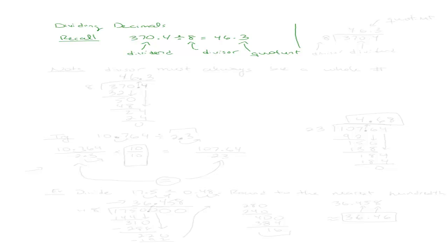If I write it in long division, the same is true. So this would be my divisor — the 8. 370 and 4 tenths would be the dividend. And my quotient would be 46 and 3 tenths. Keeping that in mind, you should know what each of these are when I refer to them.